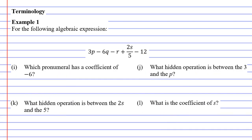Let's now move on to our last four questions. We'll look at question I. It says, which pronumeral has a coefficient of negative 6? And we can see negative 6 here, and it's in front of the q. So the pronumeral that has a coefficient of negative 6 is q.